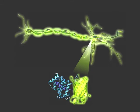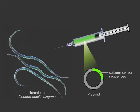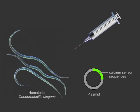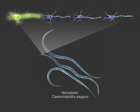We can inject model organisms such as the nematode C. elegans with plasmids that contain genetic sequences that will give rise to a calcium sensor protein. As a result, we can observe the relative changes in calcium levels in the cells of an organism over time.